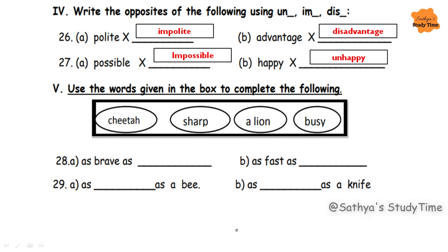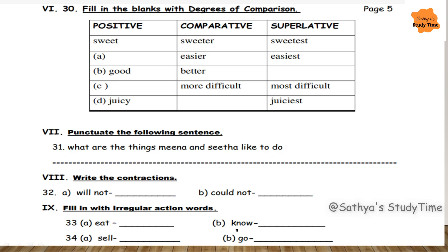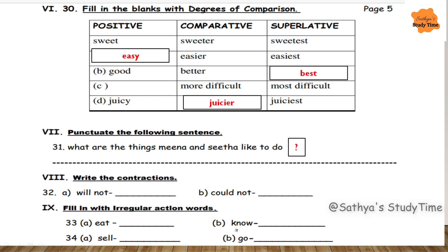Use the words given in the box to complete the following similes: as brave as a lion, as fast as a cheetah, as busy as a bee, as sharp as a knife. Next, positive, comparative and superlative degrees are given — some words are missing. Easy, easier, easiest; good, better, best; difficult, more difficult — here you have to write 'most difficult'; juicy, juicier, juiciest.